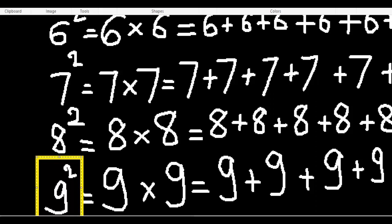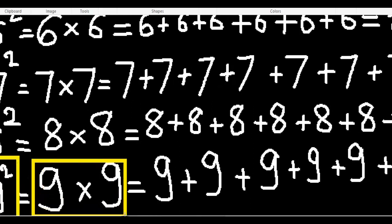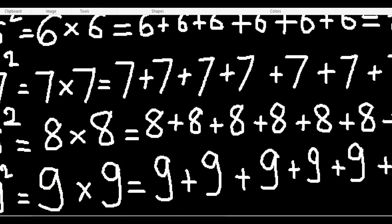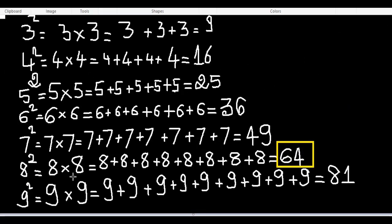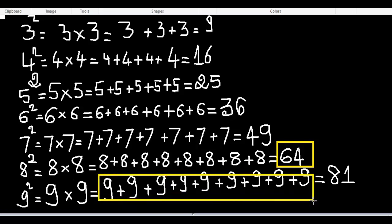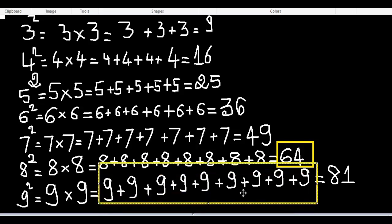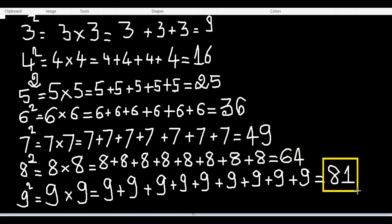Finally, nine squared. Nine times nine means nine plus nine plus nine plus nine plus nine plus nine plus nine plus nine plus nine, and that equals 81. Thank you for watching.